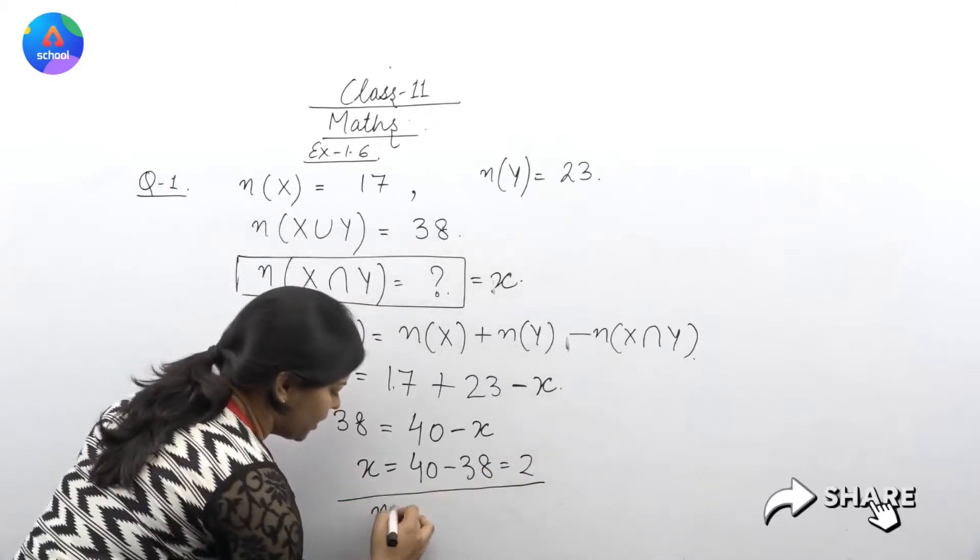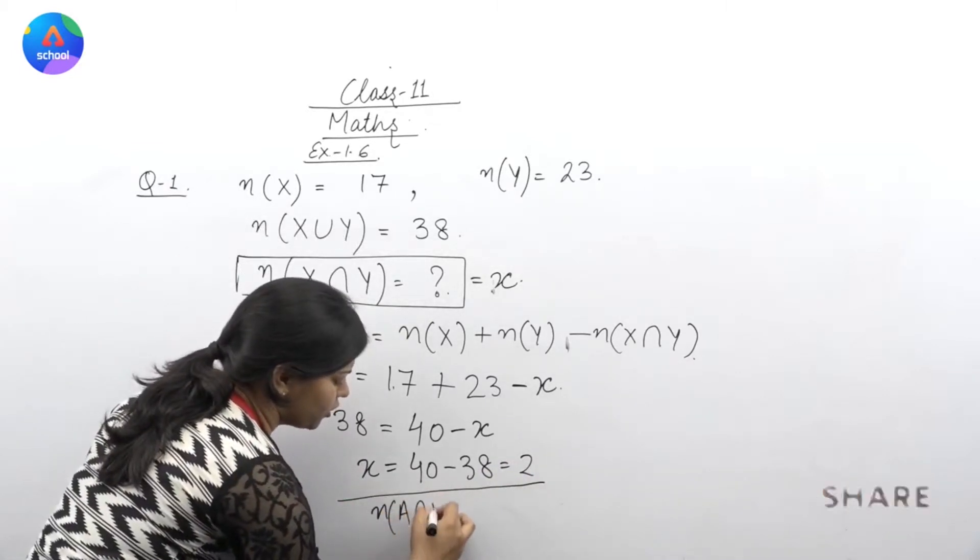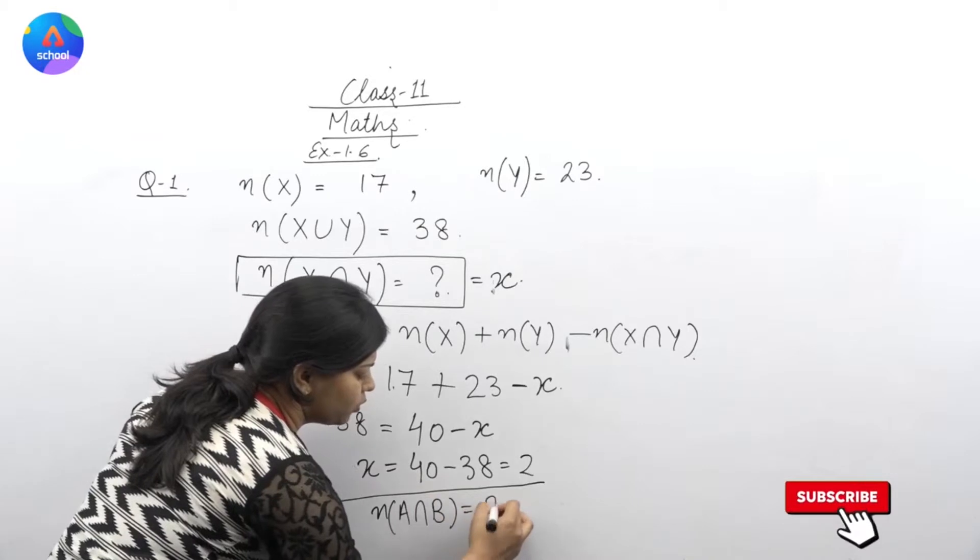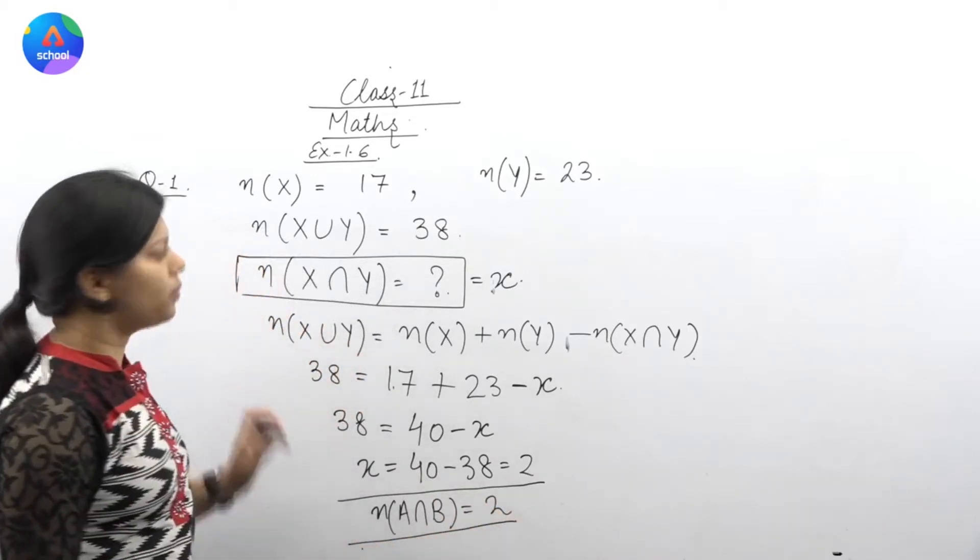And what was our x? X was our number of elements in X intersection Y. This is equal to 2. This was your question number 1.